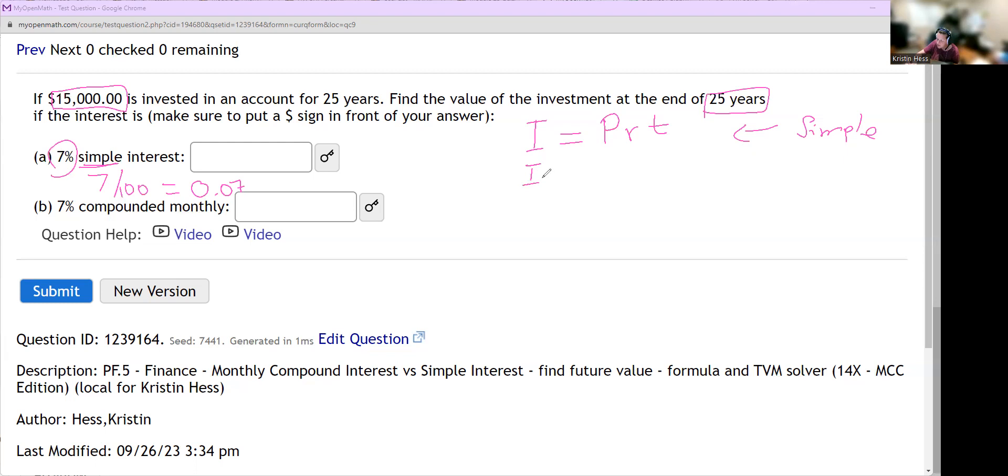So the simple interest earned is the present value of 15,000 times 0.07 times our time, which was 25 years. We're going to plug that into a calculator. I'm going to do that in a different screen. And so we're going to type in and do this with the 15,000 times 0.07 times 25 years. And that gives us 26,250.